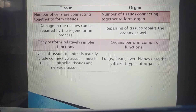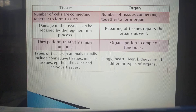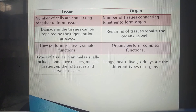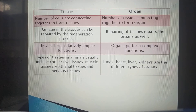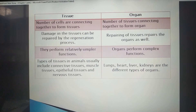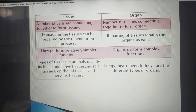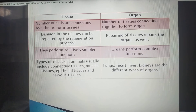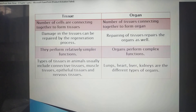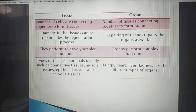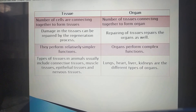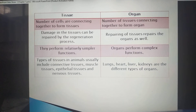Damage in a tissue can be repaired by the regeneration process. Tissues have the specific characteristic of regeneration — when some minute damage or injury takes place, tissues take energy and protein supplied by other organs to repair that damage by themselves. Since organs are made up of tissues, when tissues repair themselves, the organ is itself repaired.